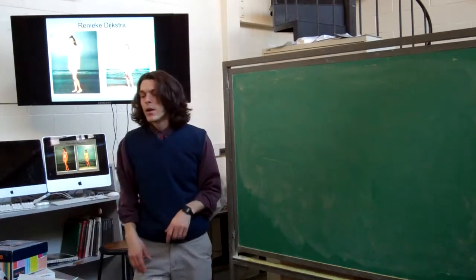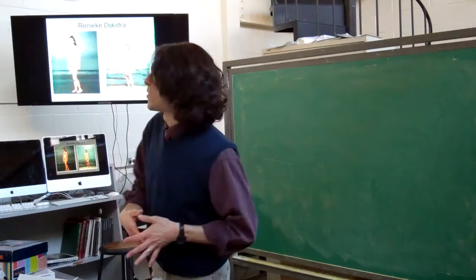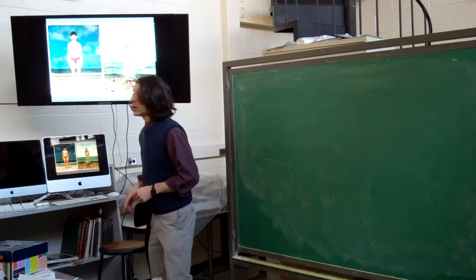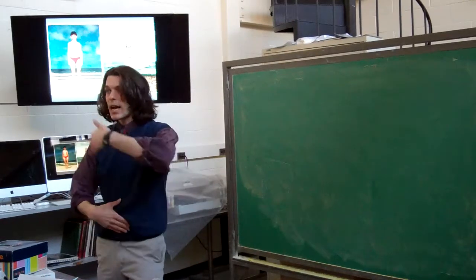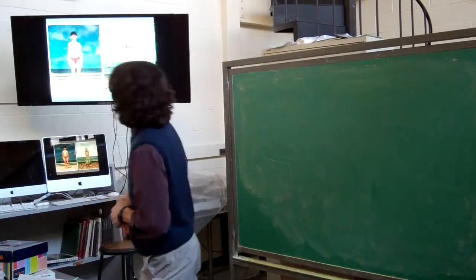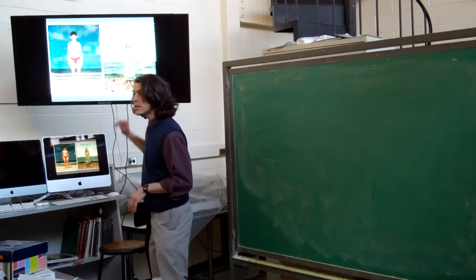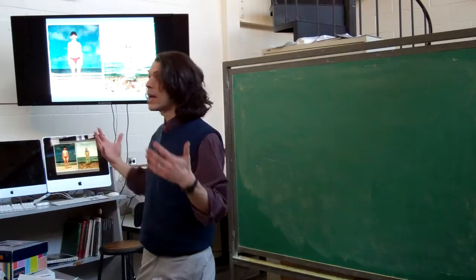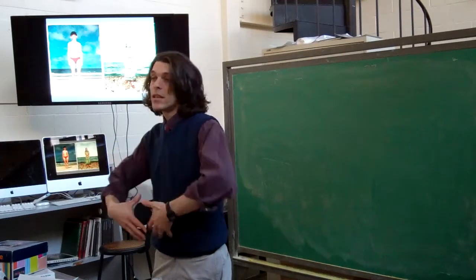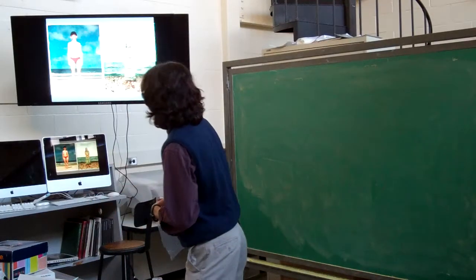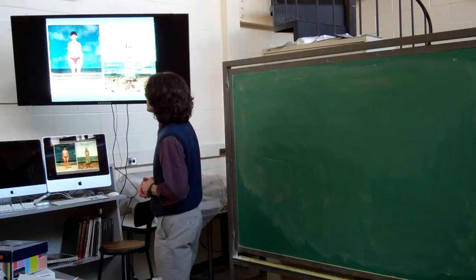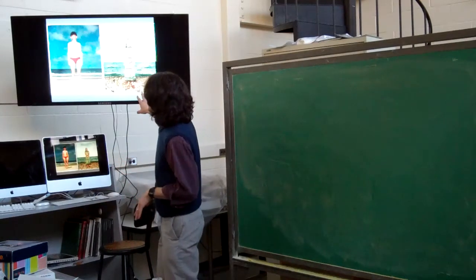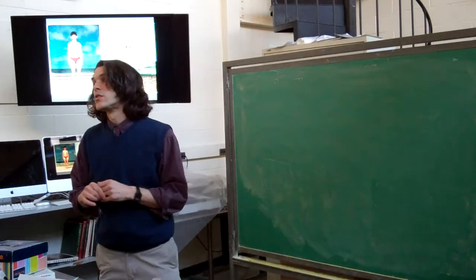I'm going to talk about Rineke Dijkstra right now. Rineke Dijkstra is my favorite photographer. She does portraits of people in moments of transition in their lives. So here we have the transition from childhood to adulthood. She is going around the world, taking pictures of pre-teens on beaches, which is a very vulnerable place for a kid. They don't have a lot of clothing on. Yet, they are very self-confident in a way that sort of makes them seem not vulnerable.